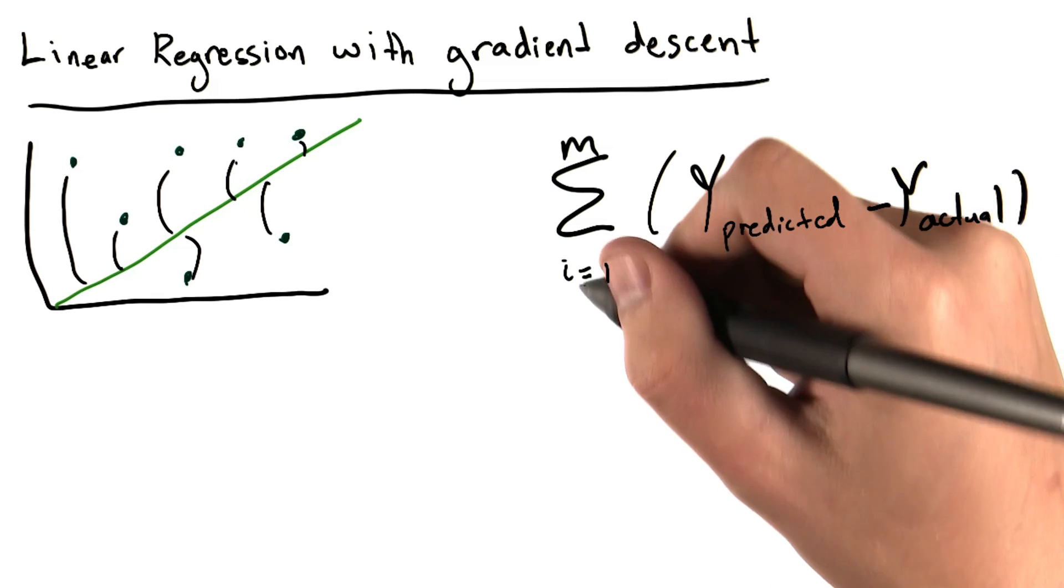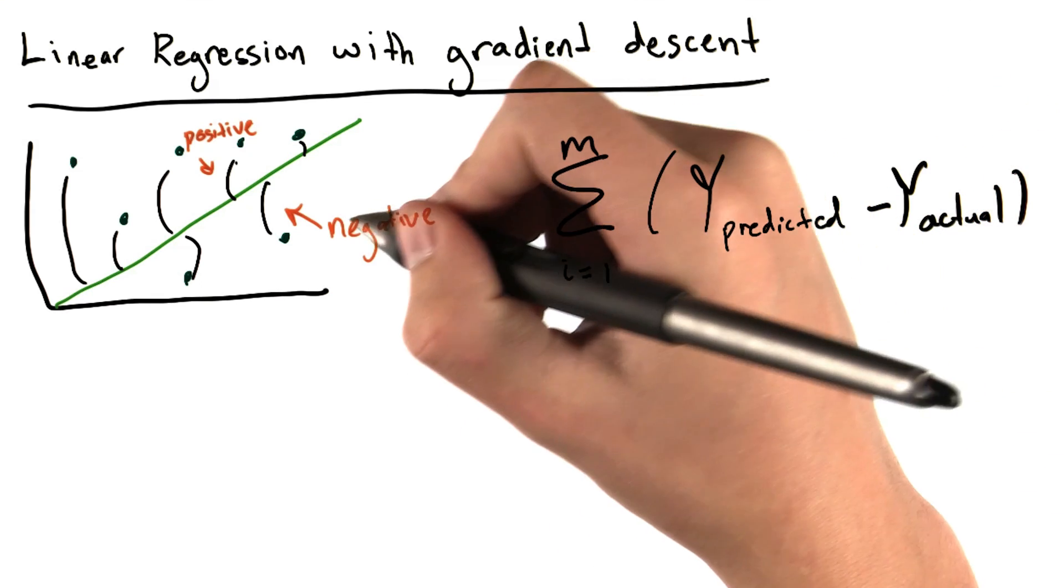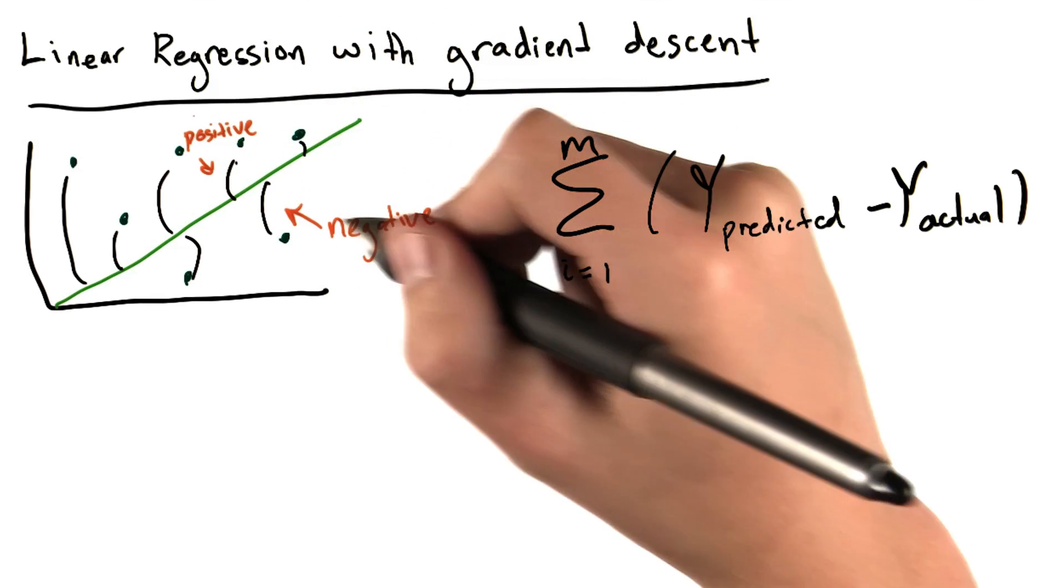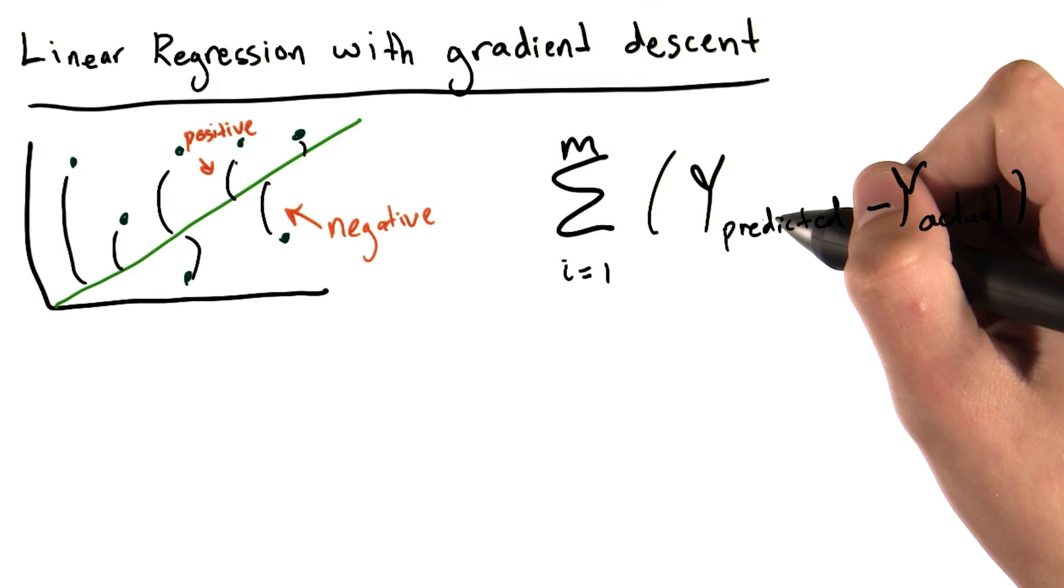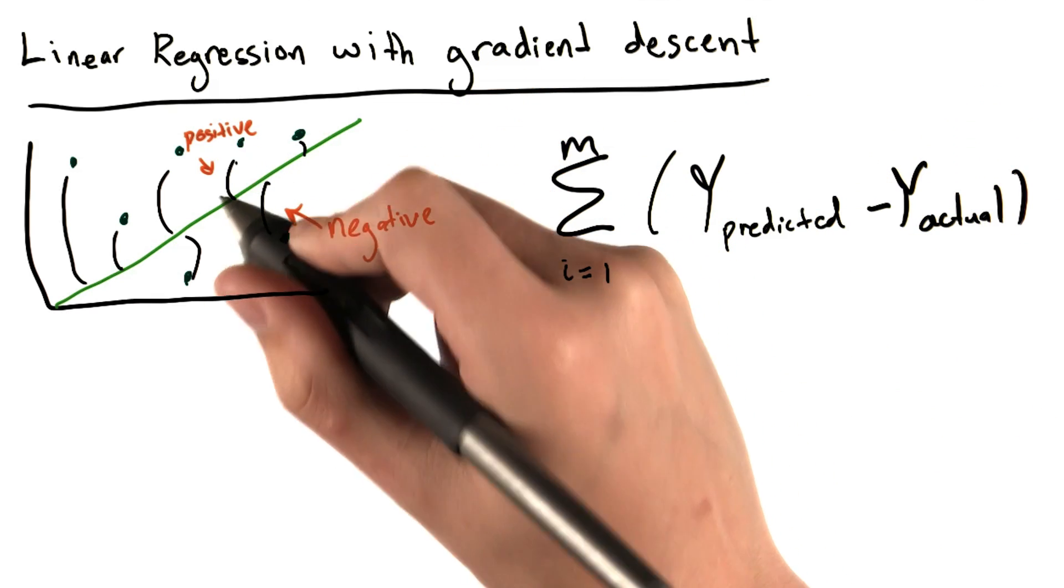That is, sum over all of our data points from i equals 1 to m, the predicted y minus the actual y. However, since these errors can be both negative and positive, if we simply sum them up, we could have a total error term that's very close to 0, even if our model is very wrong.